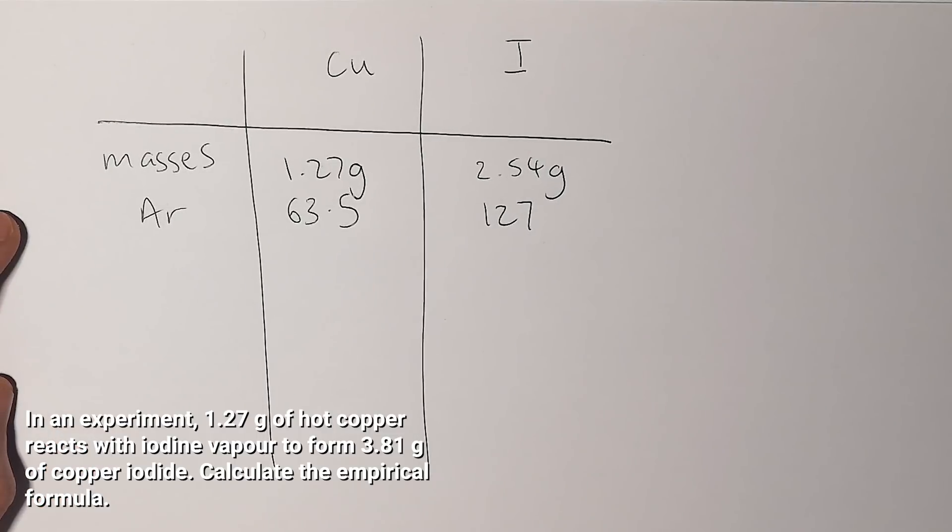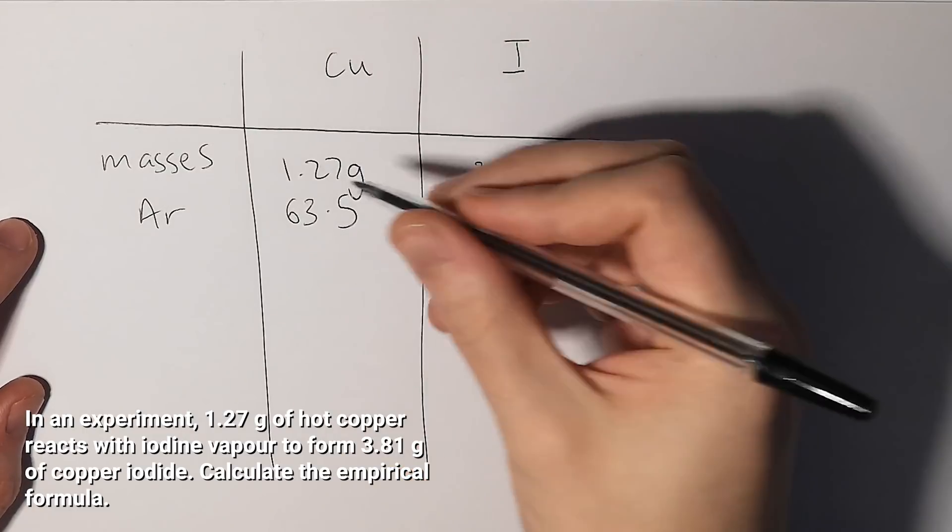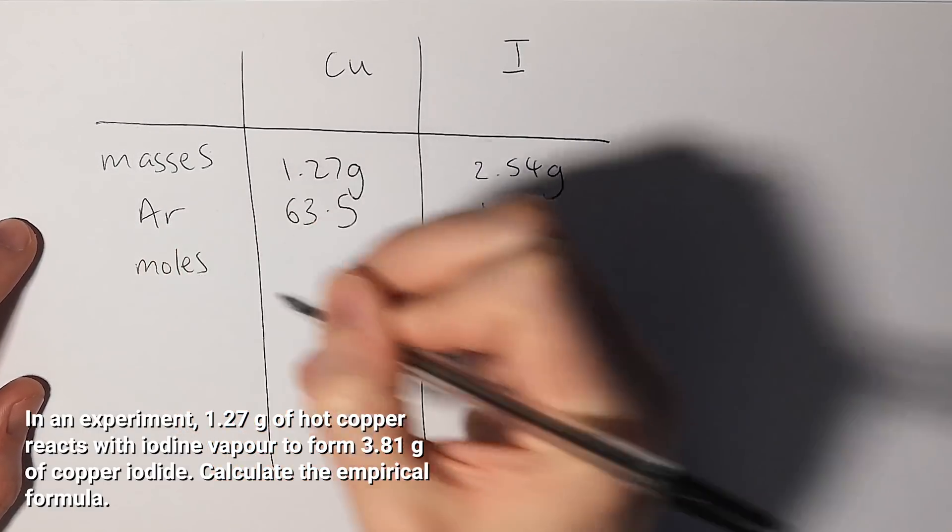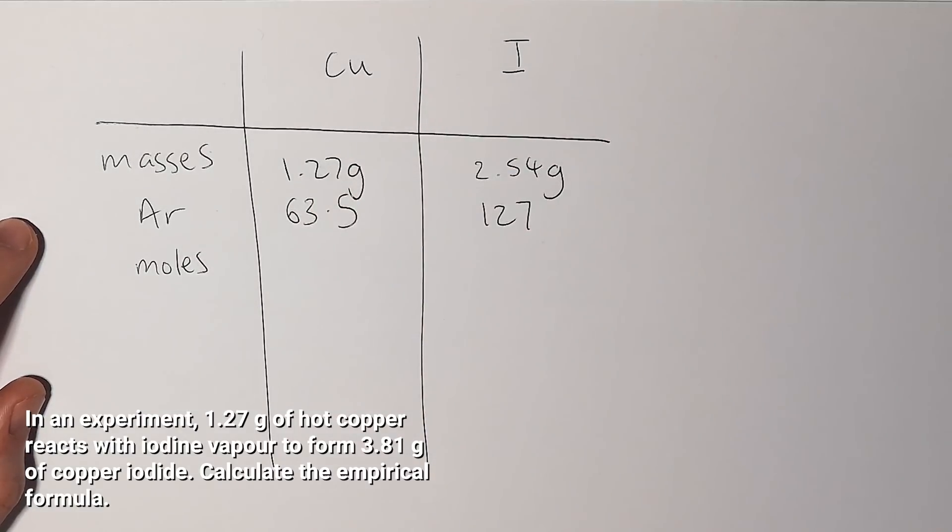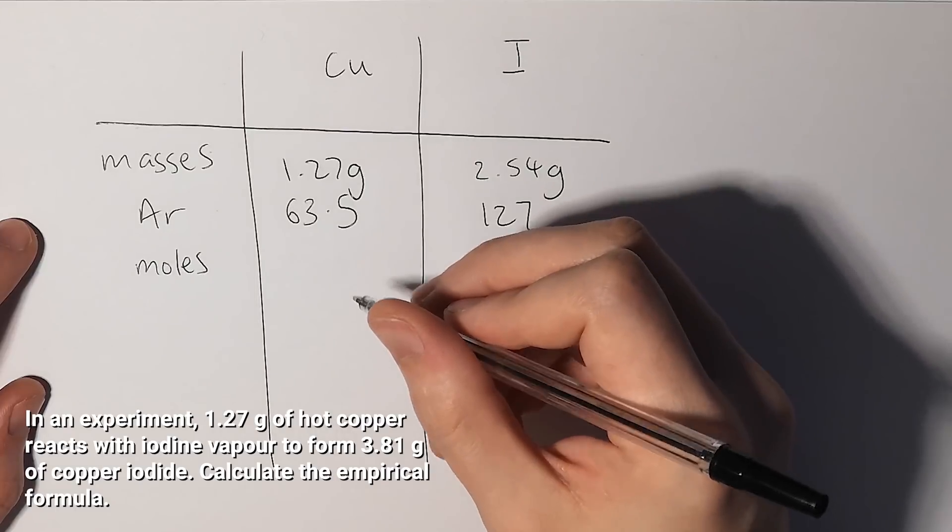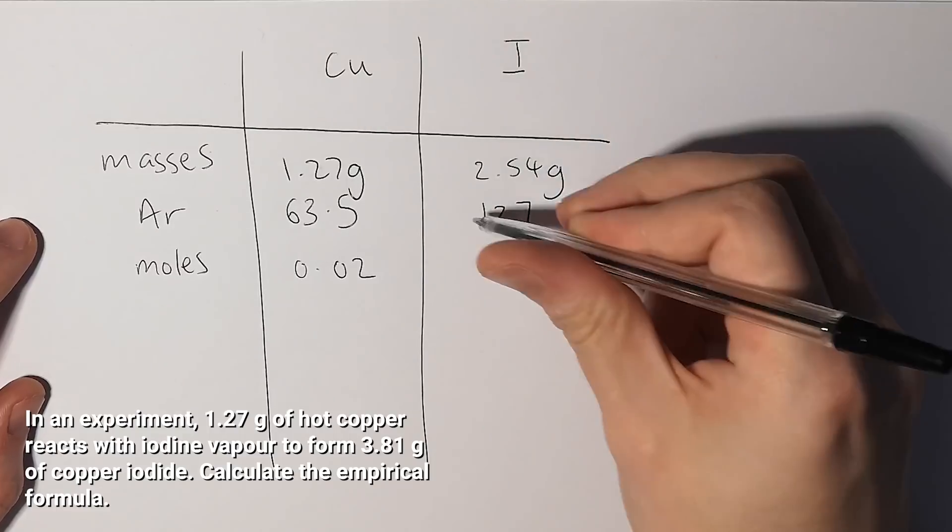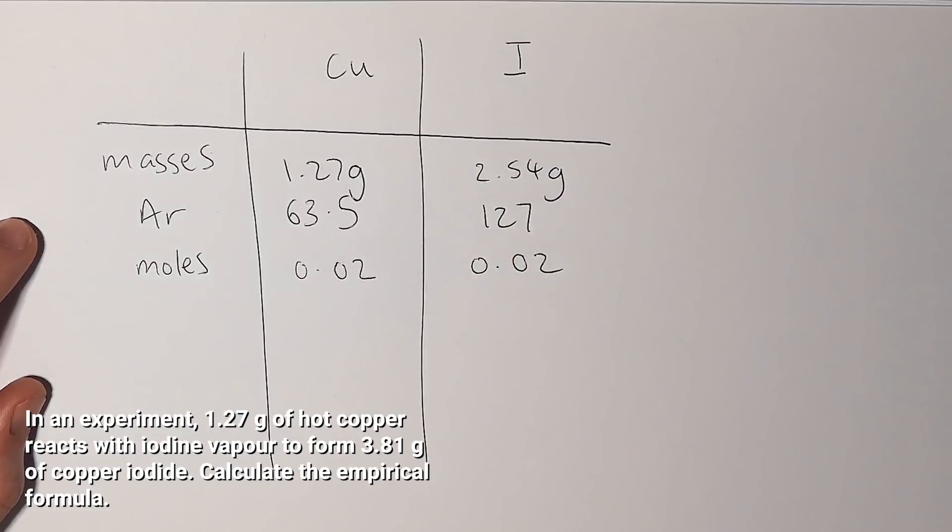Now the next step is to work out moles. We can work out the ratio of how much copper there is to iodine by dividing the mass by the AR. I'm going to call it moles because technically it is the mole value. We do 1.27 divided by 63.5 for copper which gives us 0.02, and if I divide 2.54 by 127 that also gives me 0.02.